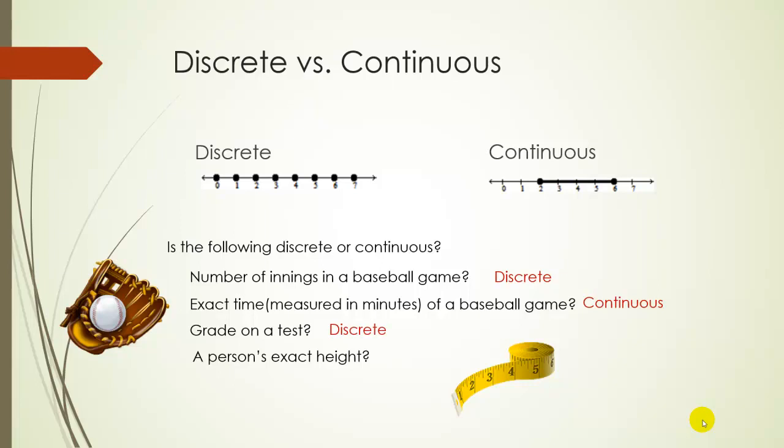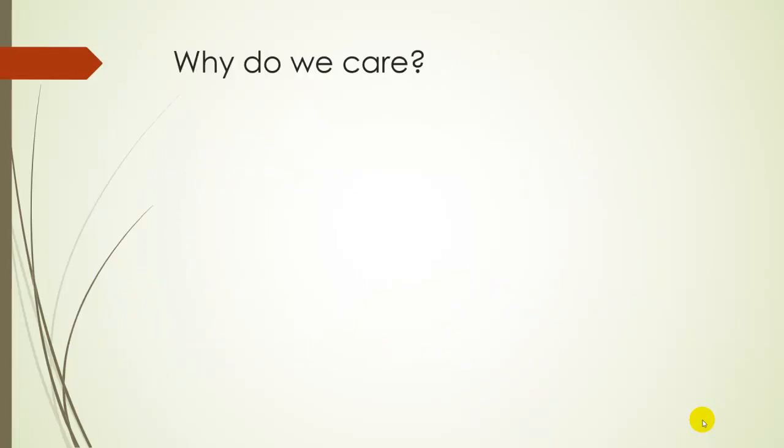What about a person's exact height? Again, this whole exact height thing, or actual height thing, if you have exact or actual as the keyword in there, it's going to be continuous usually, because it can be any number, maybe between 2 feet and 8 feet, maybe 9 feet.